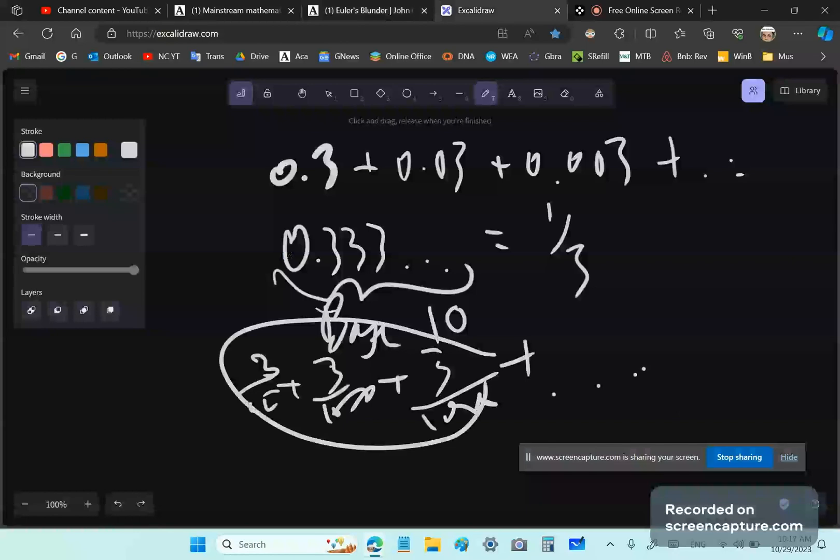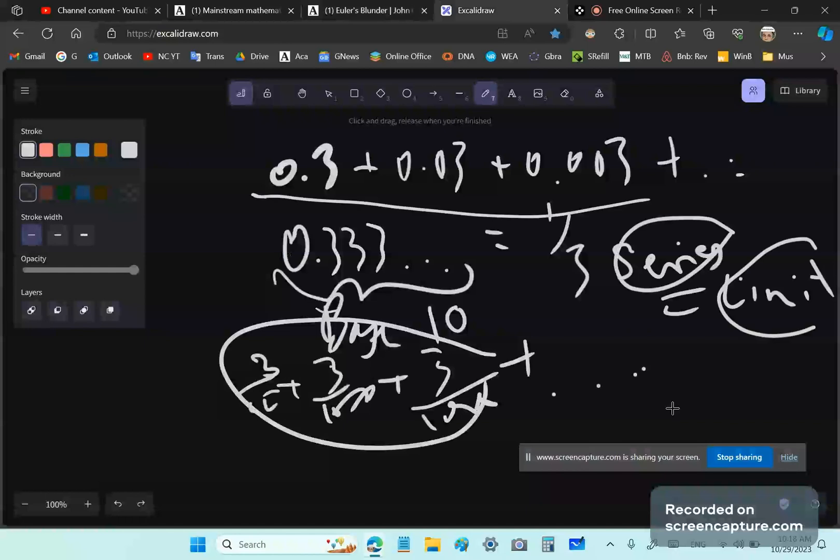When we write 0.333, what do we mean? We mean three-tenths plus three-hundredths plus three-thousandths. That's not a third. And it doesn't matter how many terms you add on. It will never be a third. It will never reach a third. So it's wrong to equate a series to its limit. Wrong. They're not the same object.